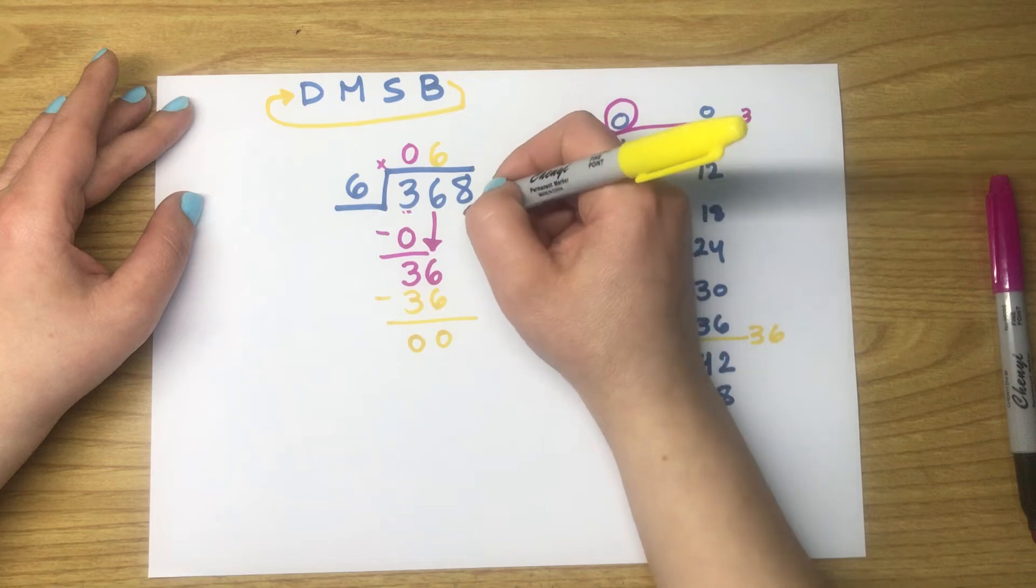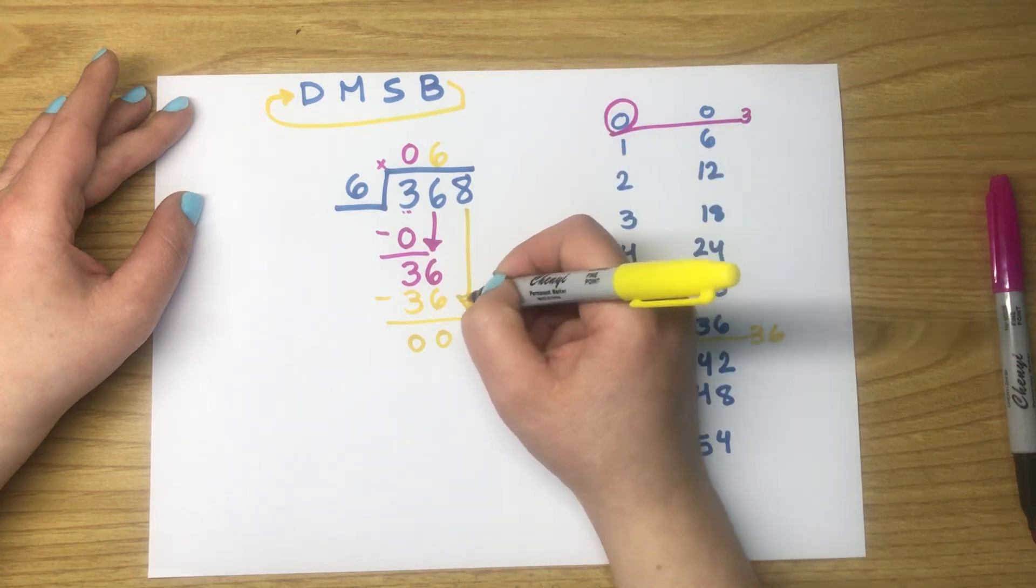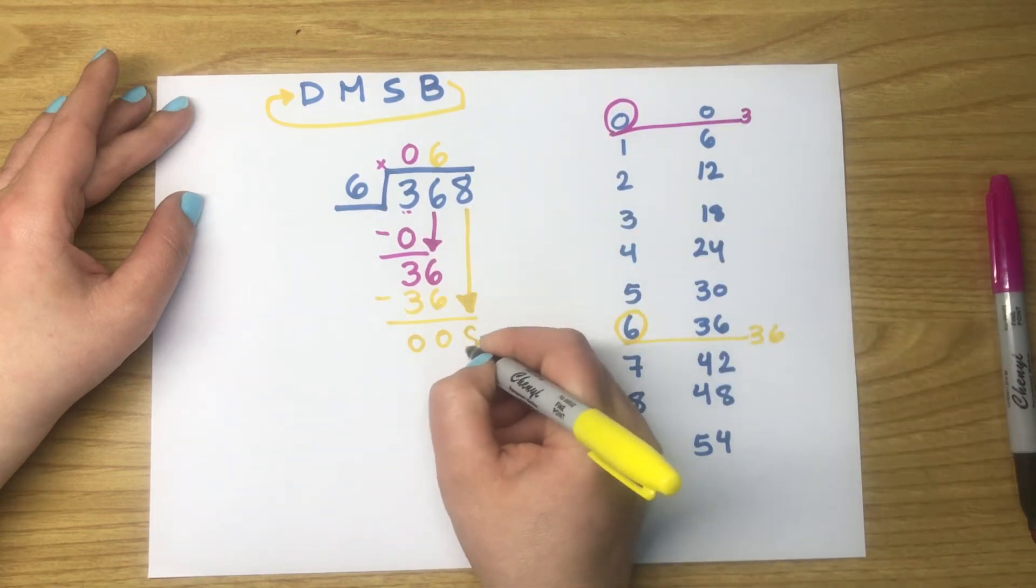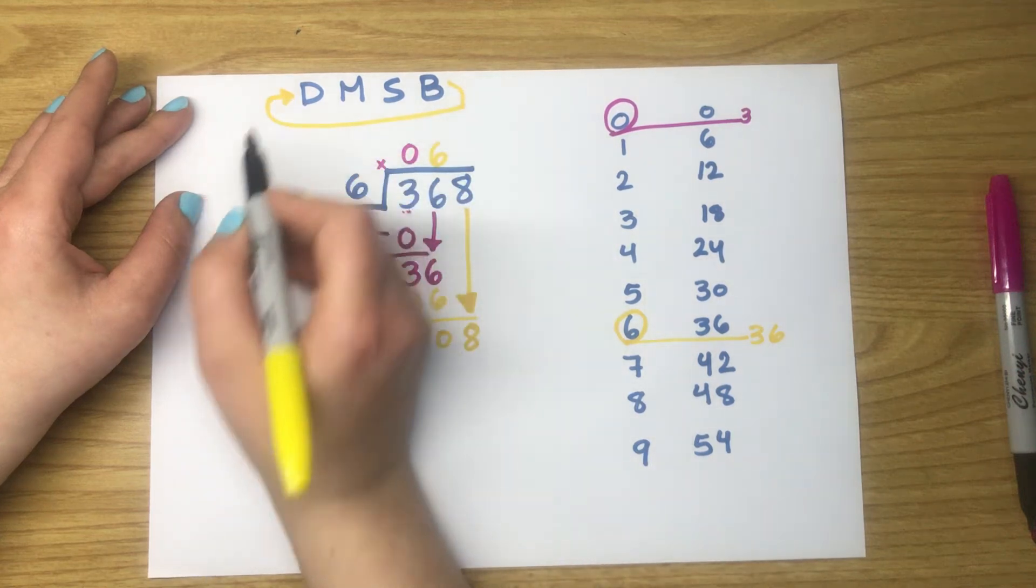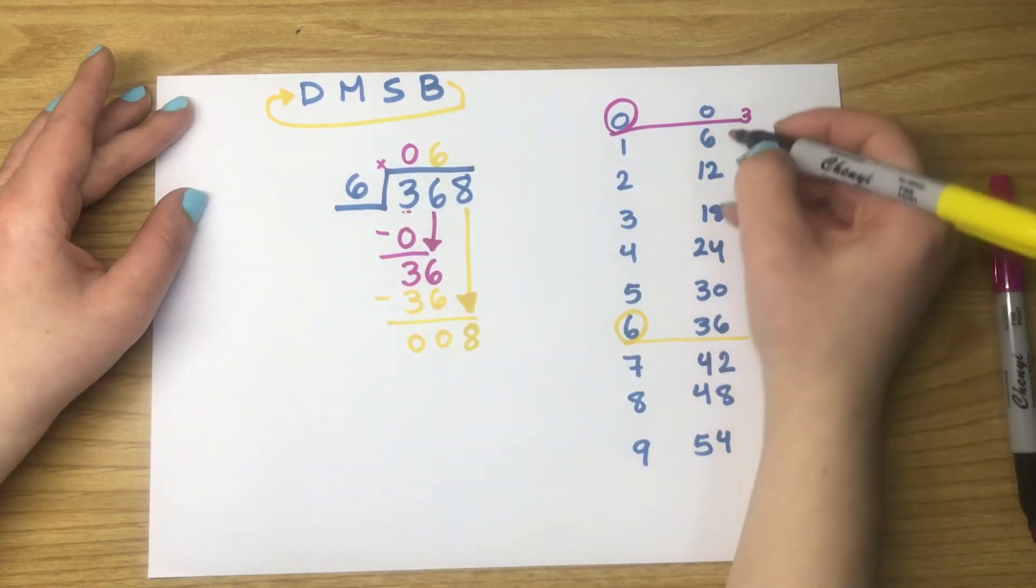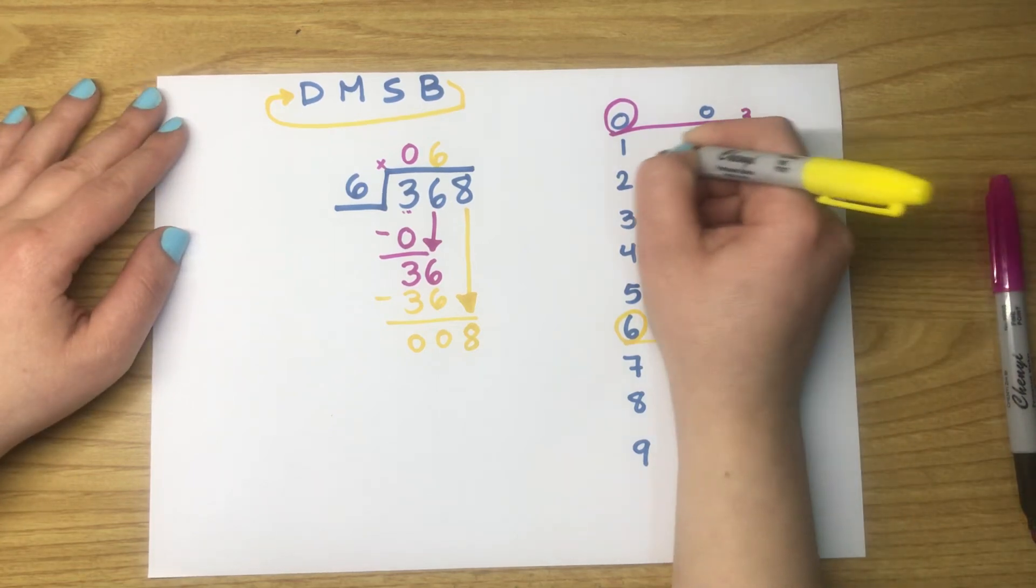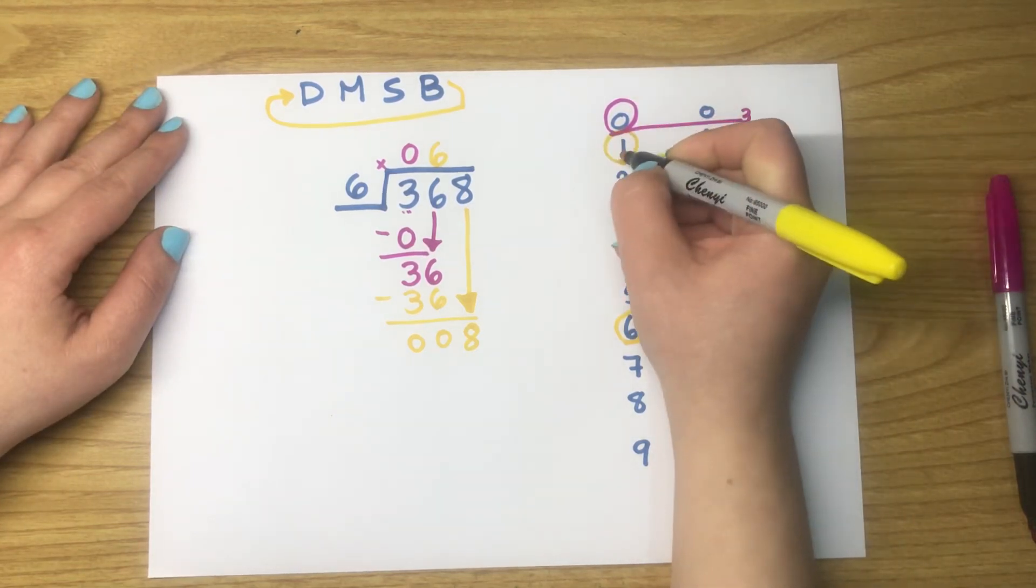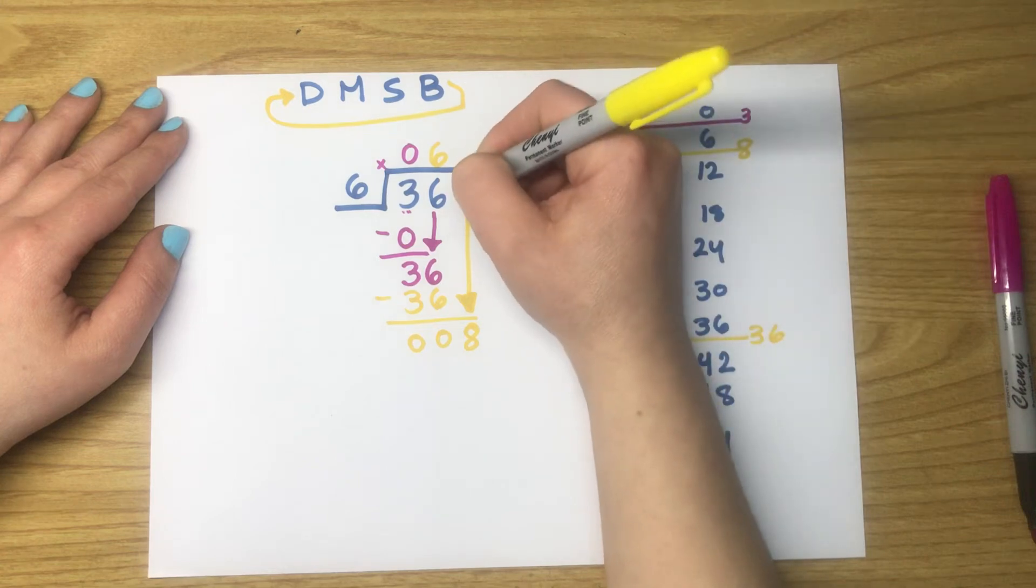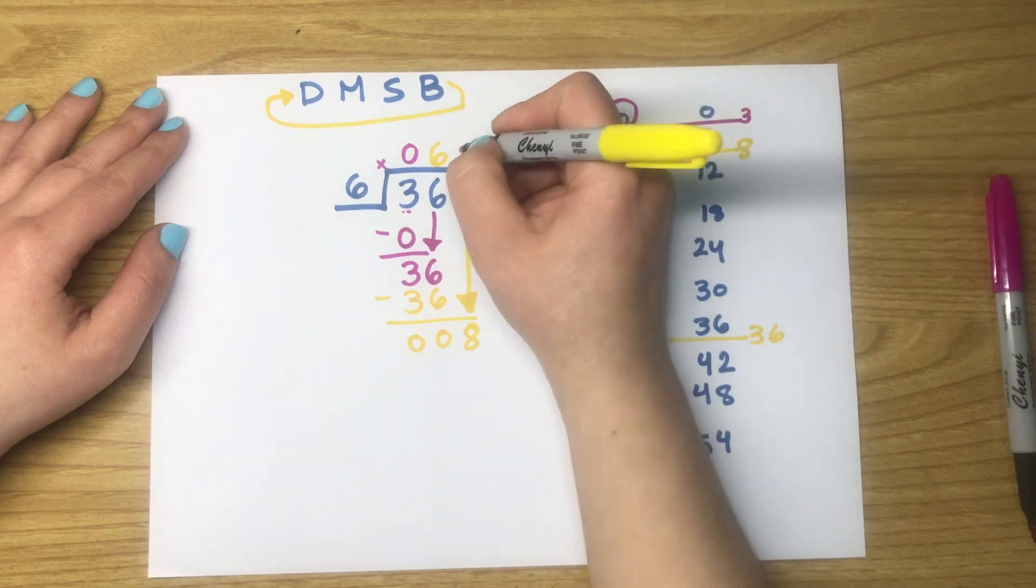The last step is bringing down the last digit, which is 8. Again, to the division: where is 8? It's between 6 and 12. Here is 8. String bubble 1 flies up, pops on top of the number that we brought down. Here is 1.